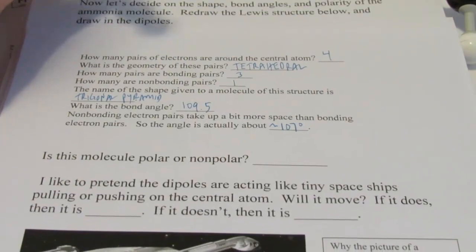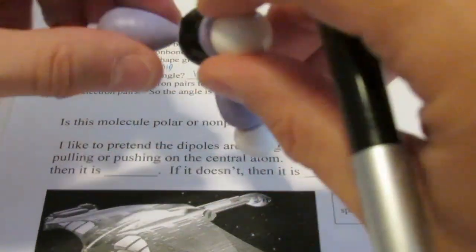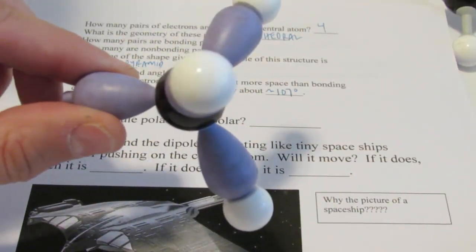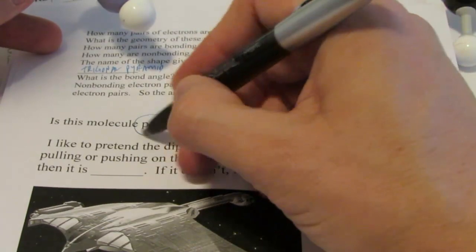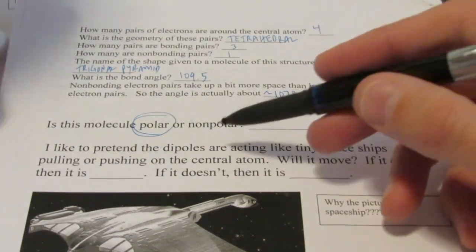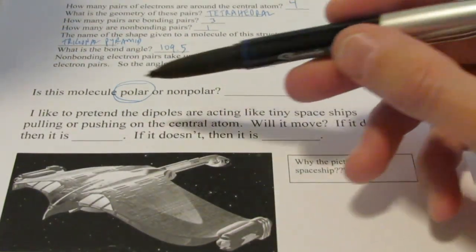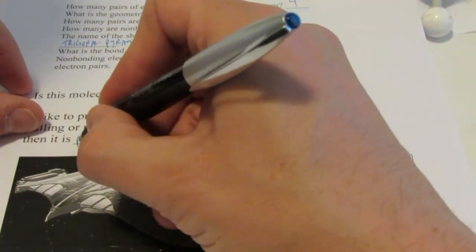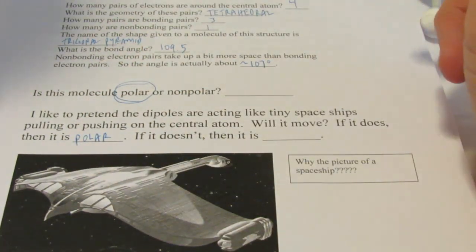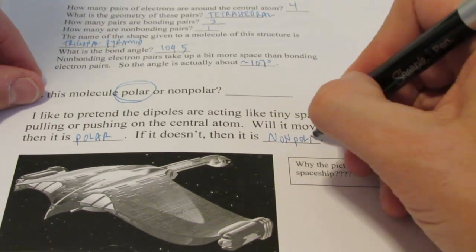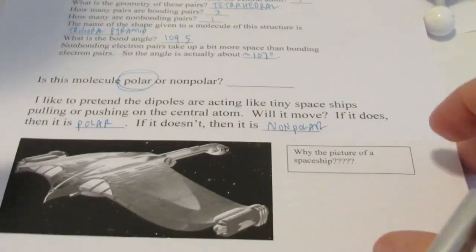Now let's think about polarity. We're going to use our little spaceship analogy. We have a spaceship here, here, and here — and there's not one back here this time. They're going to be pulling on that asteroid in the middle. That will have a net dipole and move in that direction off the paper. So if it moves, it's considered polar, and ammonia truly is a polar molecule. The dipoles acting like tiny spaceships — if the central atom moves, it's polar because the dipoles don't cancel each other completely. If it doesn't, it's non-polar.